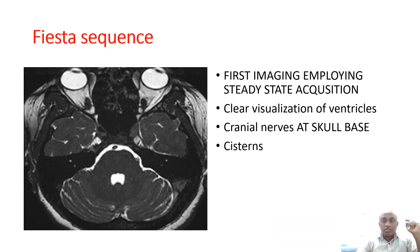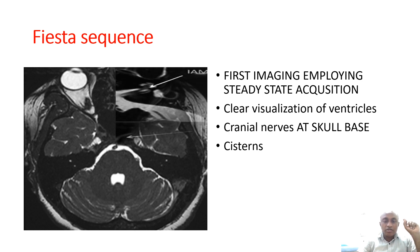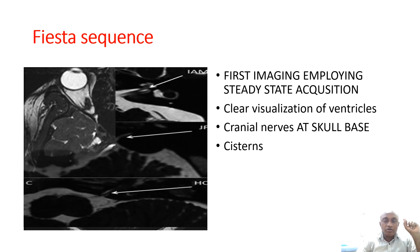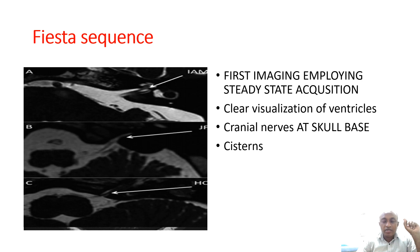FIESTA sequence is another sequence mostly used to visualize cranial nerves, cisterns, CSF, and ventricles. FIESTA stands for Fast Imaging Employing Steady-State Acquisition. It is mostly used for clear visualization of cranial nerves in trigeminal neuralgia planning and CSI plannings.